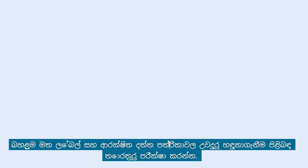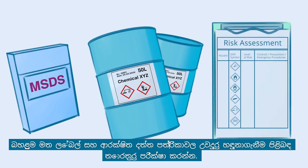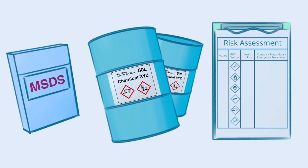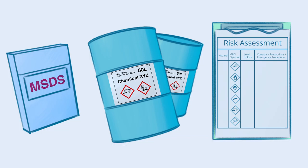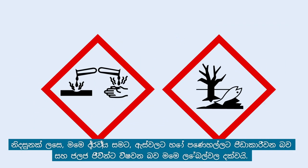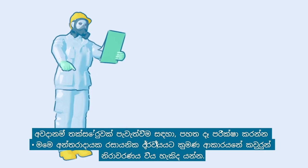Check the labels on the container and the information on hazard identification in the safety data sheet. This should be done in order to better understand the type and severity of hazards to health and environment that the chemical may pose. For example, these labels indicate that the substance may be corrosive to skin, eyes or lungs, and toxic to aquatic life.